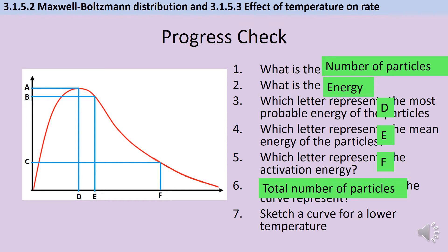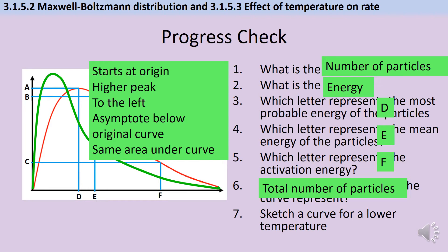The area under the curve represents the total number of particles and our lower temperature graph might look a bit like this. So key things to note here, it starts at the origin, it has a higher peak than my original curve and it's skewed to the left. The asymptote is below my original curve and it has the same overall area as that original curve.